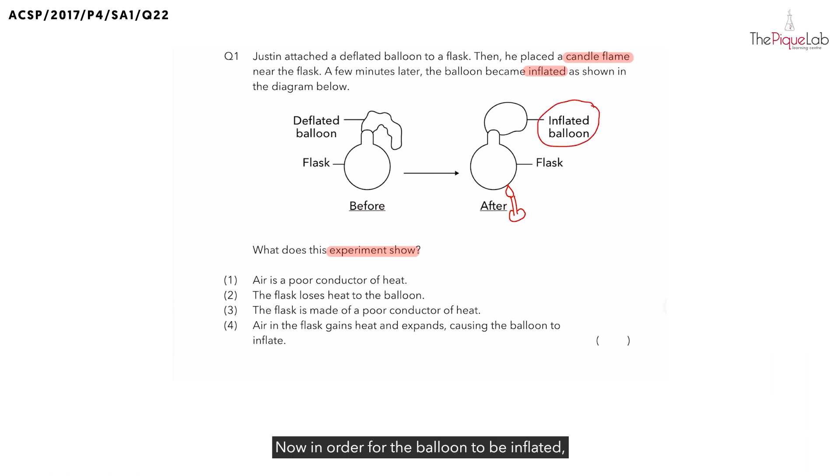In order for the balloon to be inflated, what must have entered the balloon? There must have been air. And where do you think the air came from? The air could have only come from inside the flask. So we know the air inside the flask must have entered into the balloon. But the question here is why? How come the air will enter the balloon when the candle flame was placed under the flask?